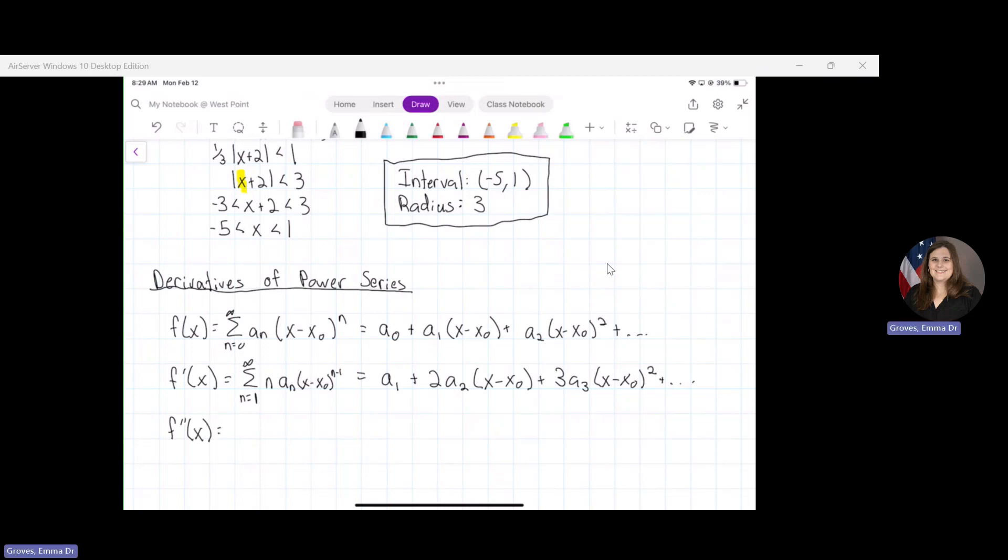And then we could do a similar type of thing with f double prime. So where do you think we're going to start counting f double prime? Two. And what do you think I'm going to write in my series? Remember when we're taking the derivative of x to a power, we bring down our exponent. So we're going to have n times (n - 1) times a_n, and then (x - x_0) to the (n - 2).